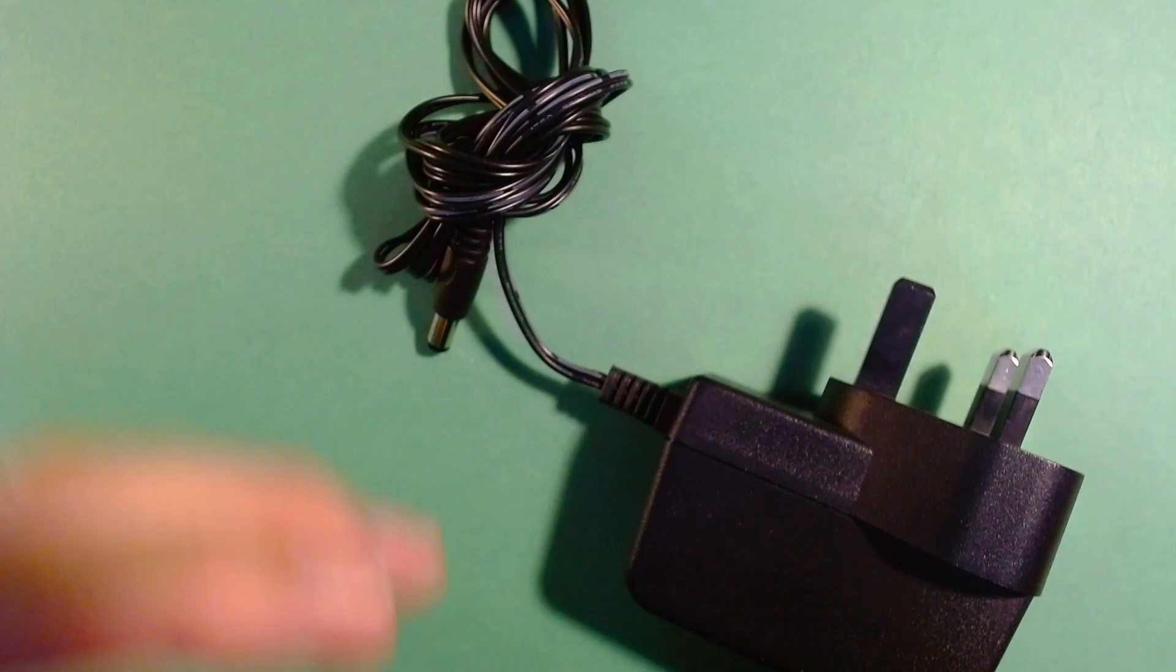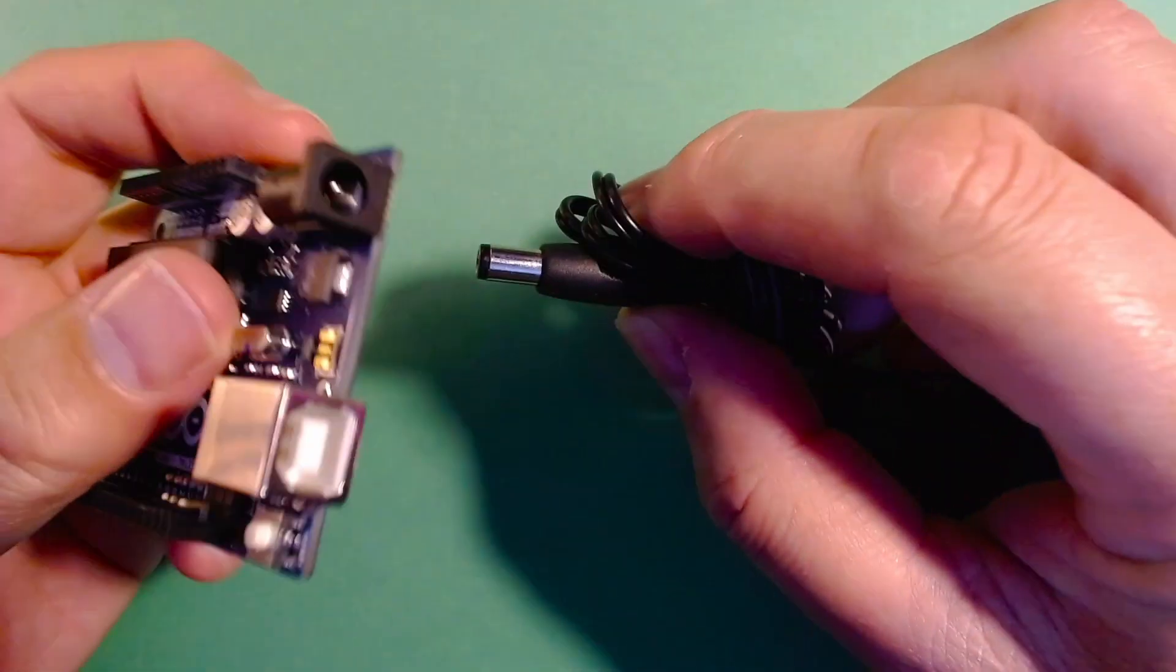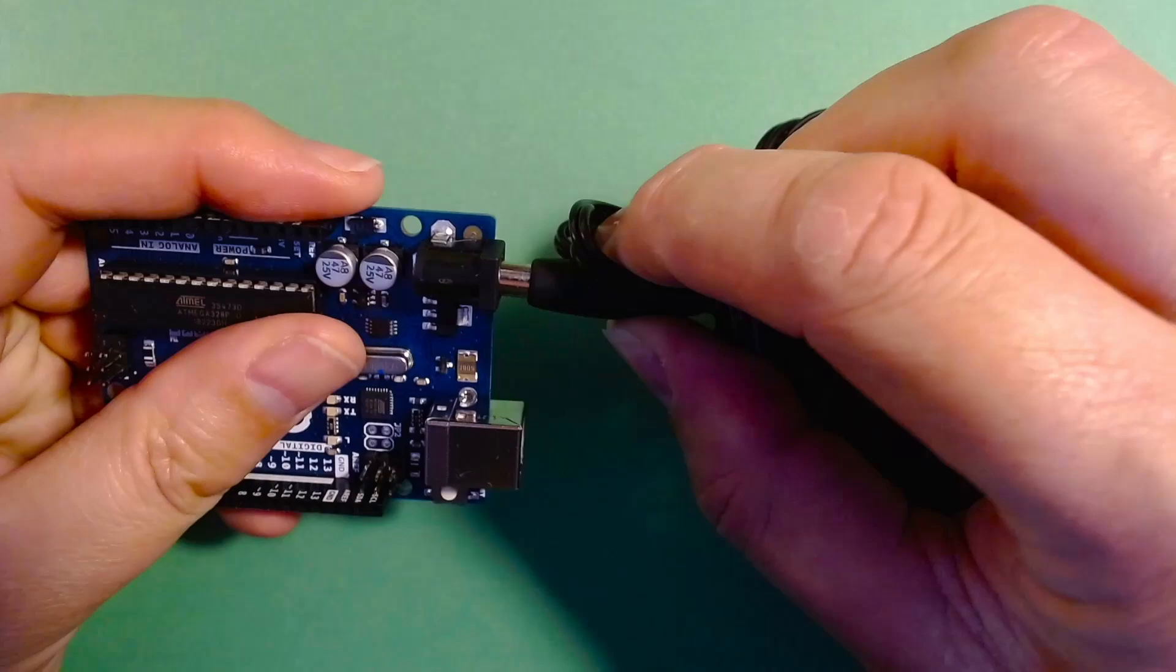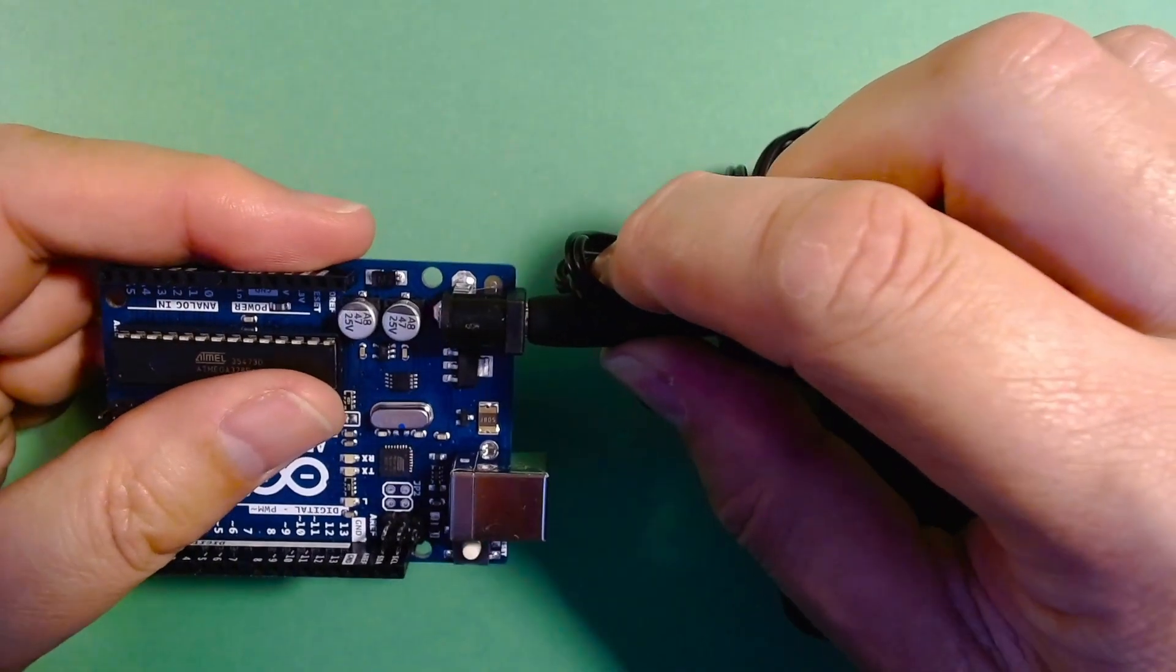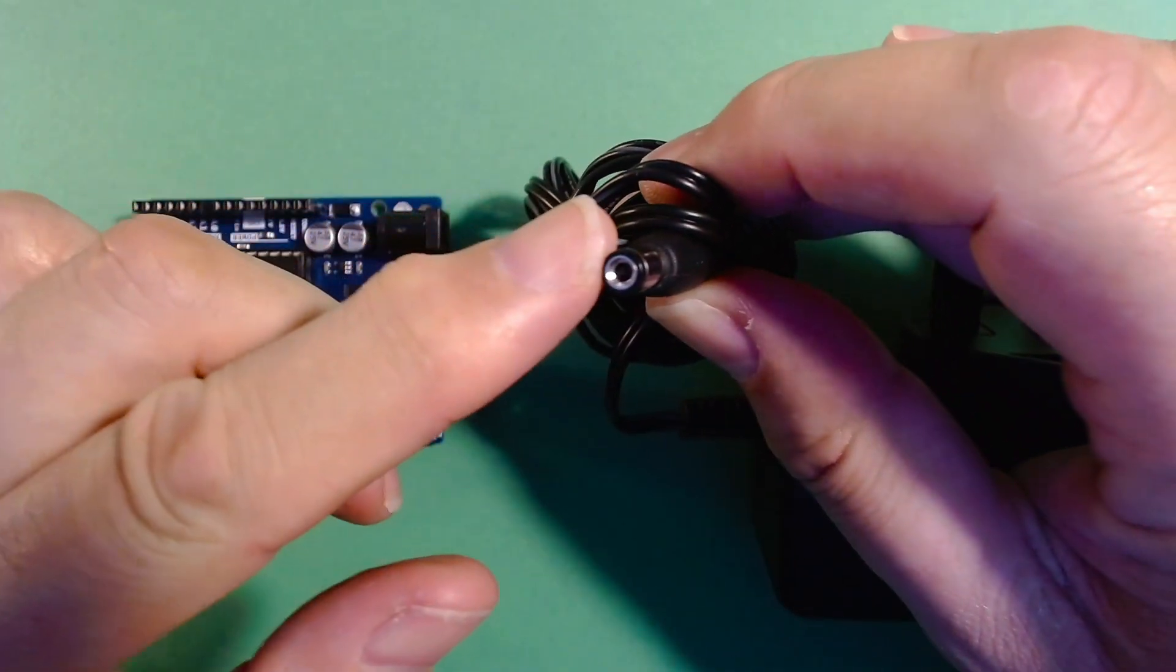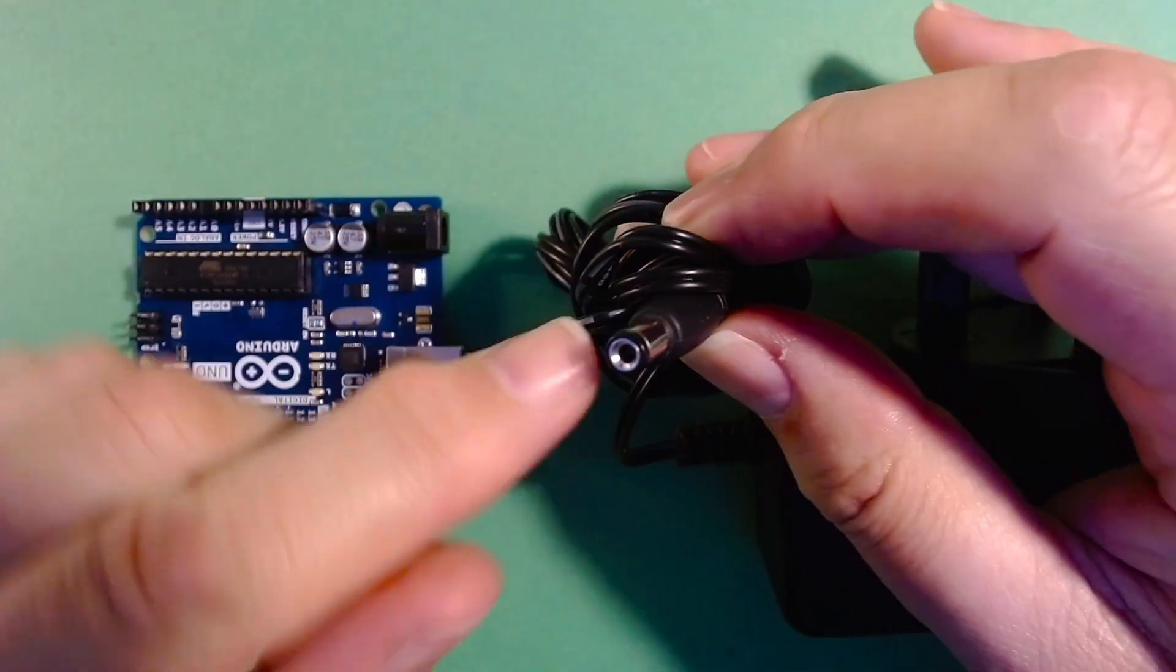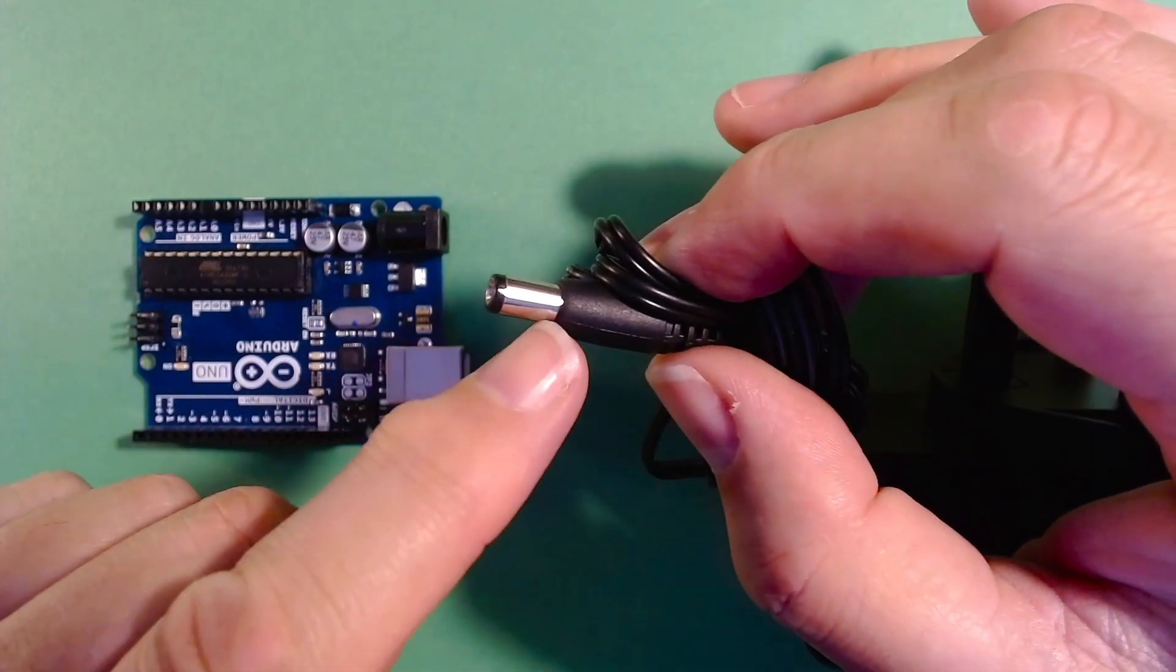Now, if you want to use the plug to work with the Arduino or similar device, you just need to make sure first that the plug actually fits. The Arduino uses a 5.5 millimeter diameter cylindrical plug with a 2.1 millimeter hole in the middle of it. This is where the positive voltage goes in, in this hole here. And then the negative is on the outer sleeve.